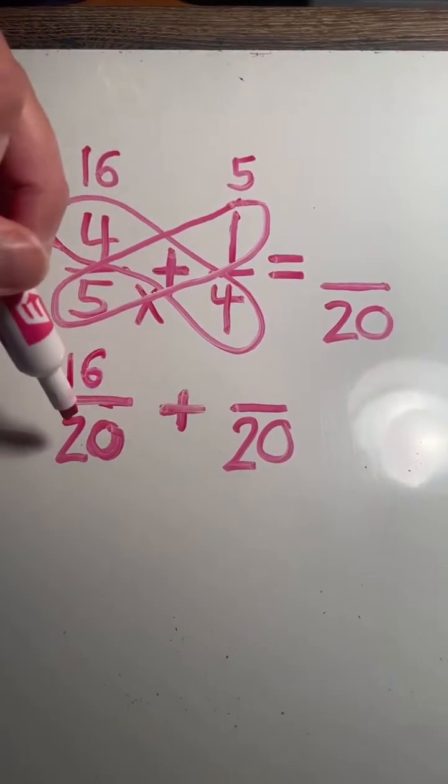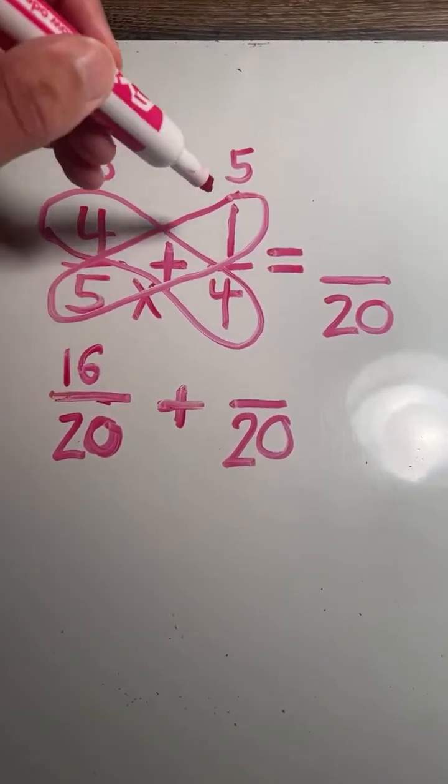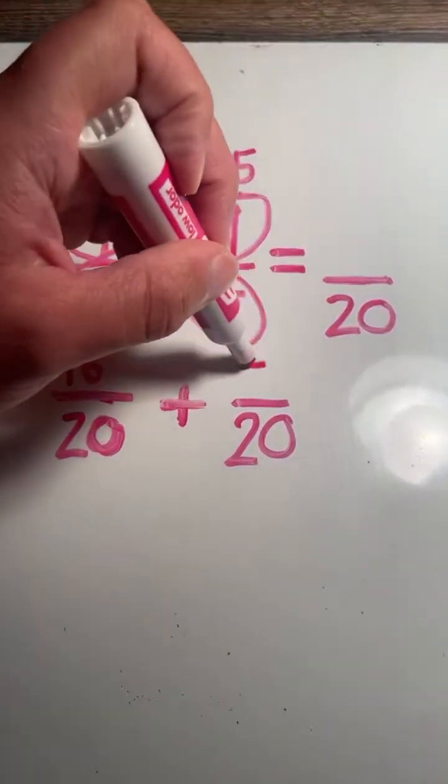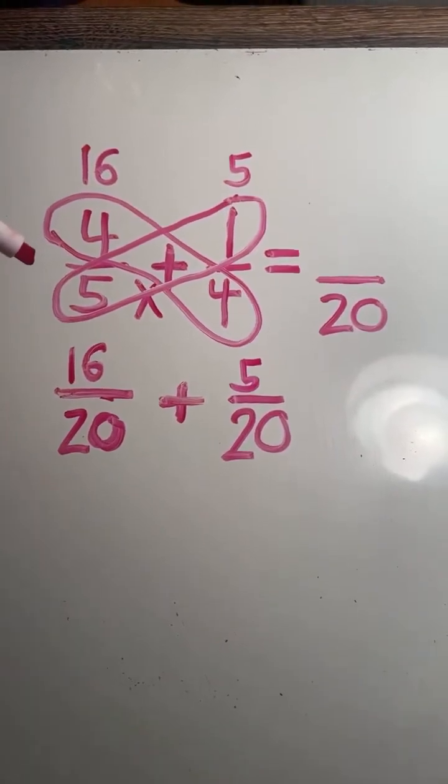So four-fifths has been converted to 16-20ths, and one-fourth has been converted to 5-20ths. And now we can add.